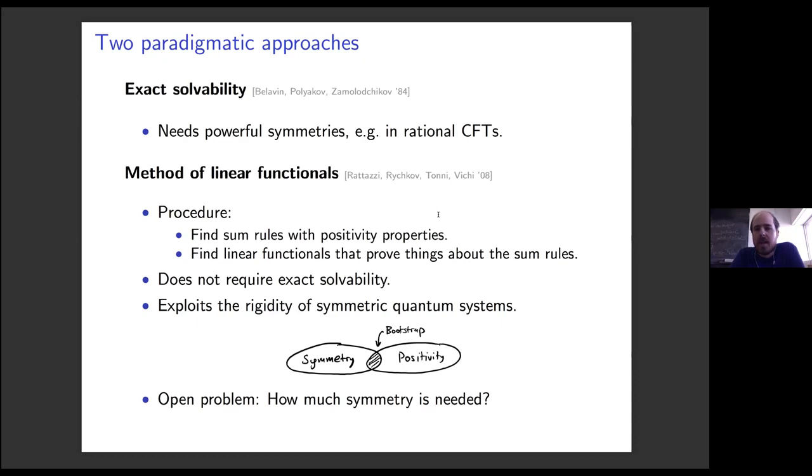Over the last decade, there's been a new kind of approach that's emerged that I'll roughly call the method of linear functionals, due to Rattazzi, Rychkov, Tonni, and Vichi. The general procedure is to find some rules, find consistency conditions that can be phrased as sum rules that have some kind of positivity properties, and then look for linear functionals that prove things about the sum rules. This may sound a little silly; it's not clear if this is actually going to yield anything useful. But one important point is that this method does not require exact solvability.